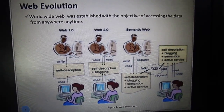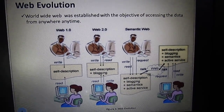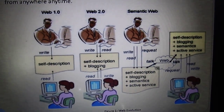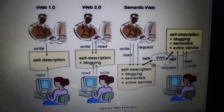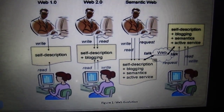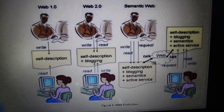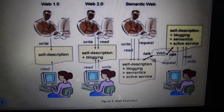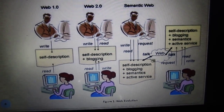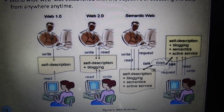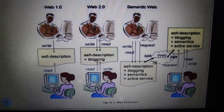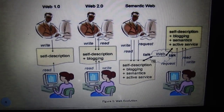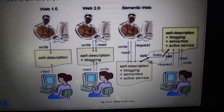The World Wide Web was established with an objective of accessing the data anywhere, anytime. Web 1.0 was all about static content, that is one-way publishing of content without any real interaction between the readers and the publishers. For example, home pages, page views, advertising, and web forms. The main problem with this is the users cannot review the information — they cannot comment, give feedback or review. It was just an information portal.